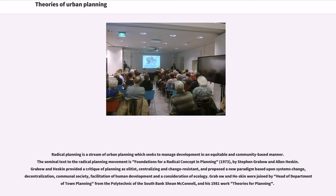Radical planning is a stream of urban planning which seeks to manage development in an equitable and community-based manner. The seminal text of the Radical Planning Movement is Foundations for a Radical Concept in Planning by Stephen Grabo and Alan Heskin. Grabo and Heskin provided a critique of planning as elitist, centralizing, and change-resistant, and proposed a new paradigm based upon systems change, decentralization, communal society, facilitation of human development, and a consideration of ecology.